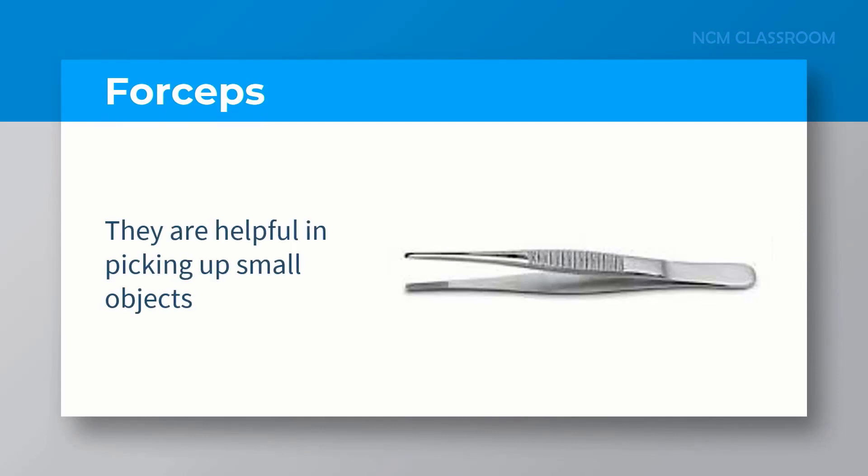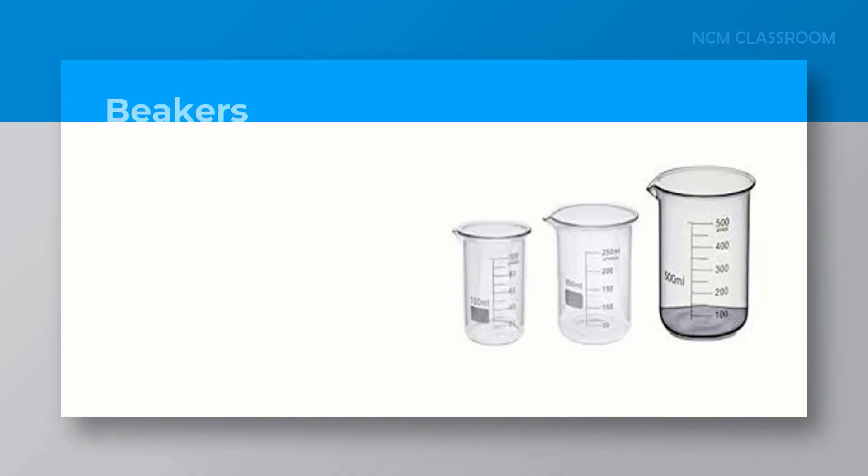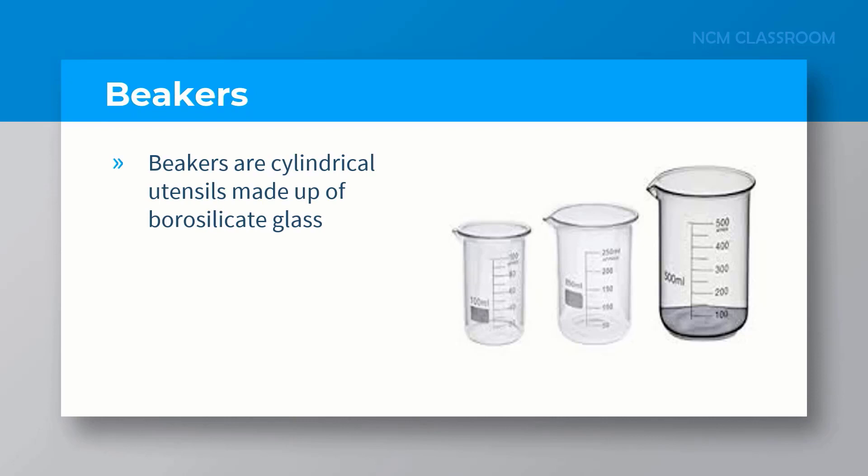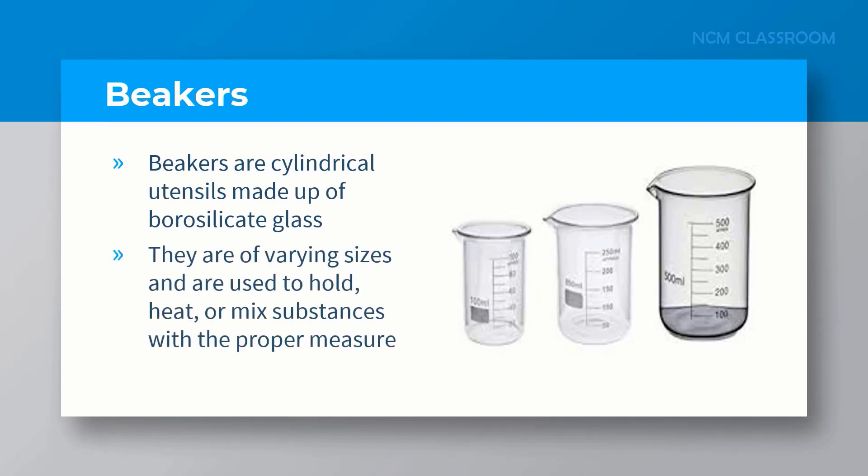They are helpful in picking up small objects. Beakers are cylindrical utensils made up of borosilicate glass. They are varying sizes and are used to hold, heat, or mix substances with the proper measure.